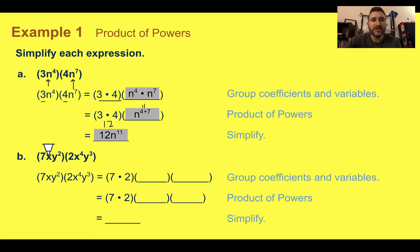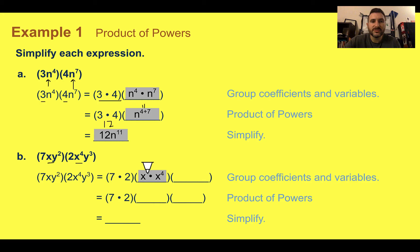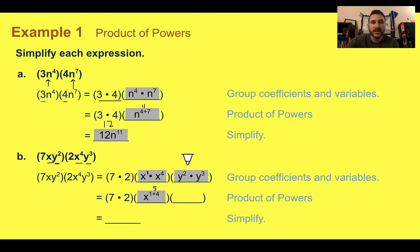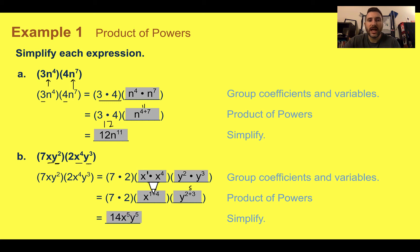Even when we have more than one variable, like in example two, we can still group things together that are alike. So 7 and 2 we can group together. X and x to the fourth we can group — this x is really a hidden one, so we have one plus four, giving us x to the fifth. We can do the same with our y's: y squared and y cubed group to give y to the two plus three, which is also five. Seven times two is 14, so our final simplified expression is 14x to the fifth, y to the fifth.